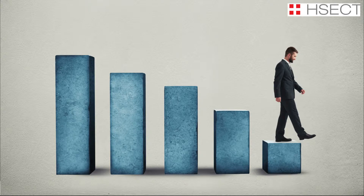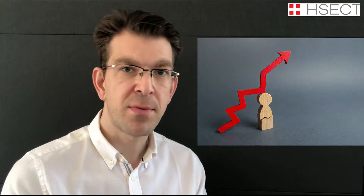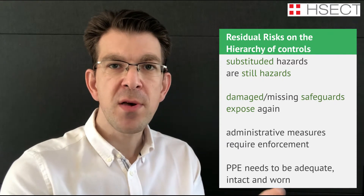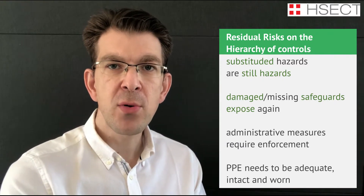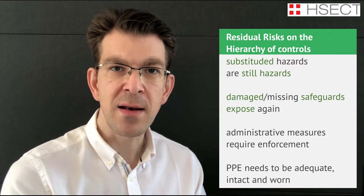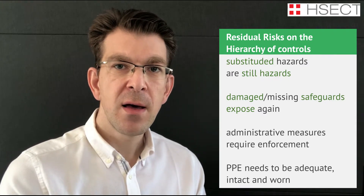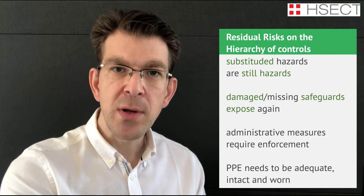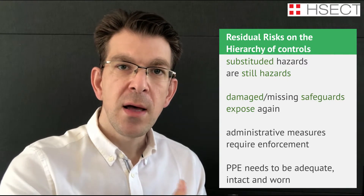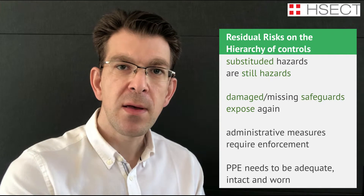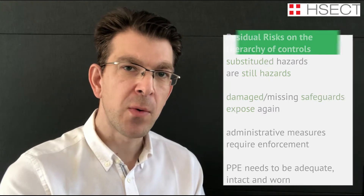The effectiveness of the safeguard shrinks with each step down this hierarchy, and in parallel the workload to keep the solution effective and in place goes up. A replaced hazard is still a hazard. A missing or wrongly installed safeguard exposes the employee to the hazard again. An administrative measure is only as effective as it is enforced, including training and controlling. And PPE has to be adequate, intact, and worn whenever required.